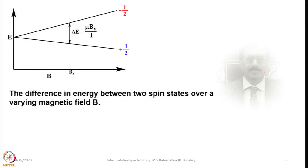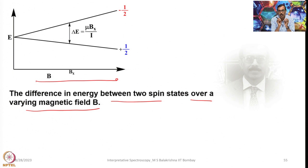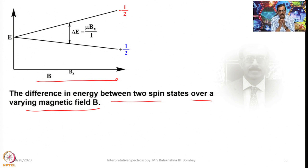The difference in energy between two spin states over a varying magnetic field shows that as magnetic field strength increases, the gap increases. When the gap increases, the energy required will be very high. In that case, the chemical shift difference between different nuclei in the same molecule increases, so the spectrum will be well resolved, making it easy to understand various functional groups present. This is the advantage of increasing the field strength.